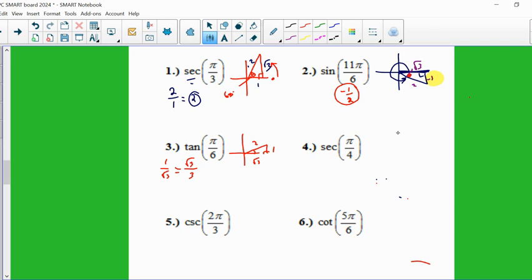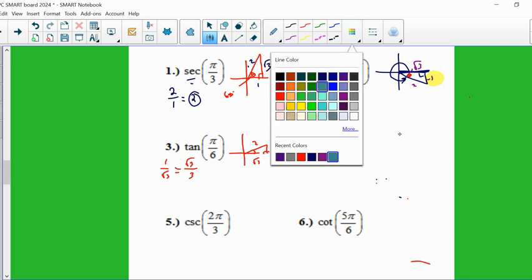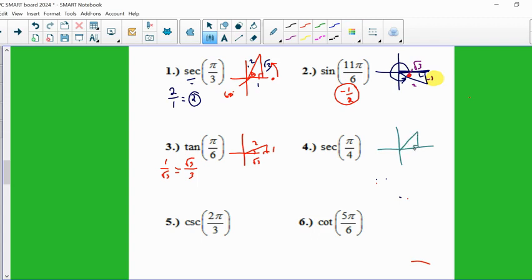Okay. Secant of pi 4ths. Again, pi 4ths is in quadrant 1. So that's going to create 1, 1 root 2. This 45 degree angle, that's where pi 4ths lives. Again, we always start in the positive x-axis. We draw in a counterclockwise direction. That's how I knew that's in quadrant 1. Secant is the hypotenuse over the adjacent. So it's a root 2 to 1 ratio, which is root 2.